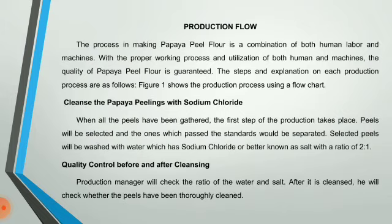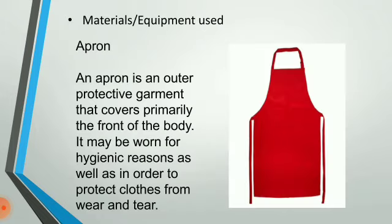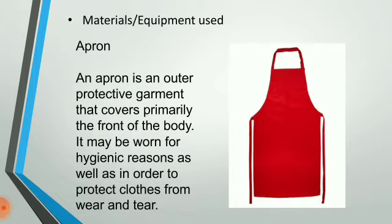Once done with the production flow, you can proceed to listing materials and equipment used. Provide a brief description of each material. For example, if you use an apron: 'An apron is an outer protective garment that covers primarily the front of the body. It may be worn for hygienic reasons as well as to protect clothes from wear and tear.'